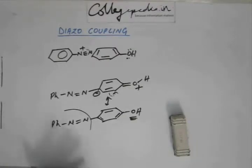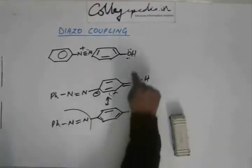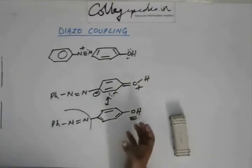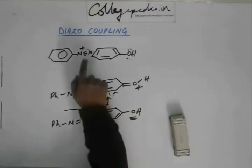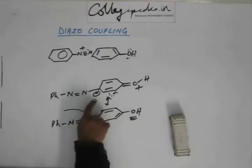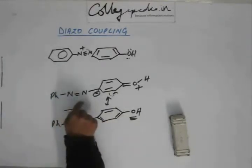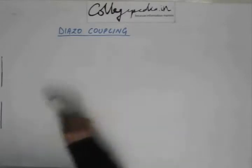This is how the azo compound will be formed through this mechanism. Instead of this OH, we can have other groups as well, and that other group should be electron donating such that sufficient negative charge polarity develops at this carbon in order to react with or give its electron to this diazonium. Let's see a few more examples where this coupling would be possible.